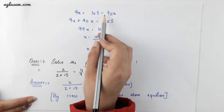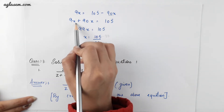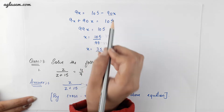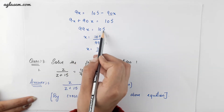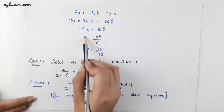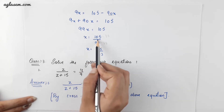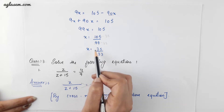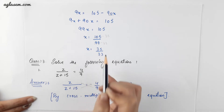Moving all the variable terms to one side and constant terms to the other, we will get 99x is equal to 105. For solving the value of x we get 105 divided by 99, which gives a result of 35 by 33.